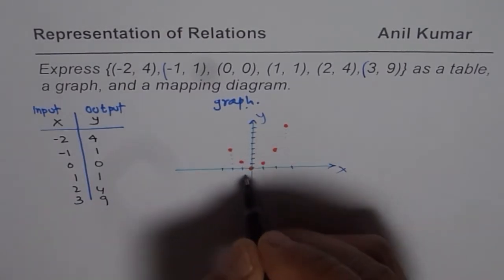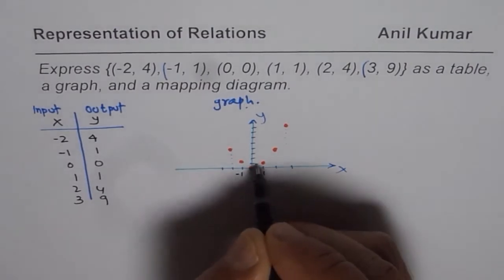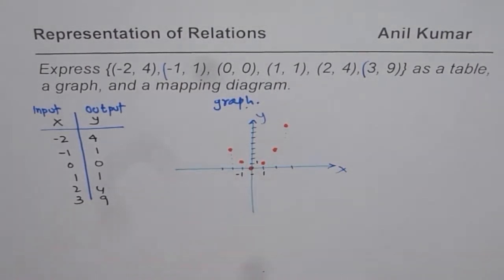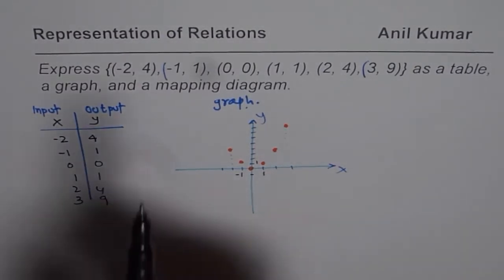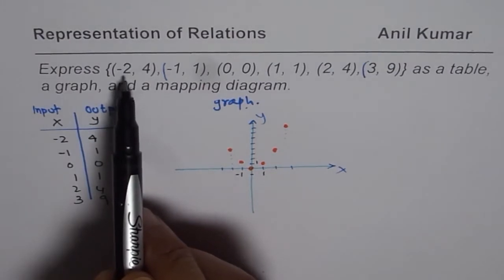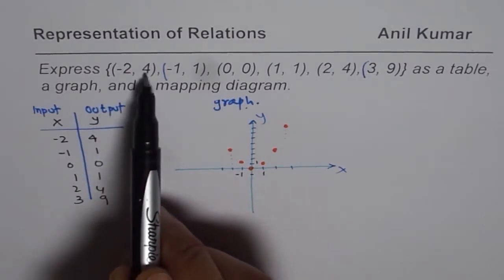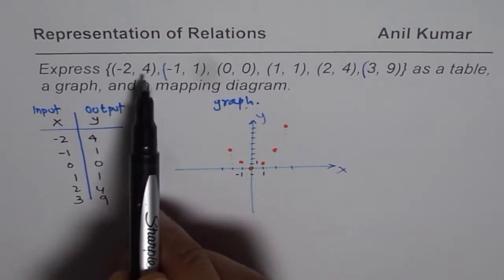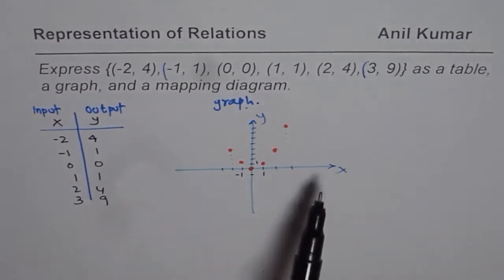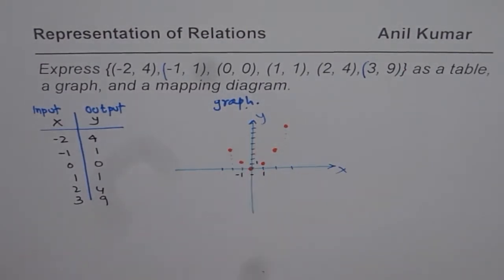Let's label the axes. This is minus one and this is one along the x-axis, and here we have minus one on the other side. Along the x and y axes, the initial values represent the x-coordinates and the final values are represented by y. The independent variable is along the x-axis and the dependent variable is on the y-axis.